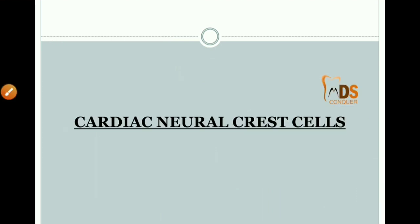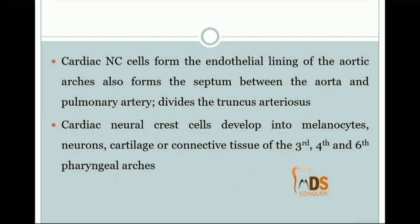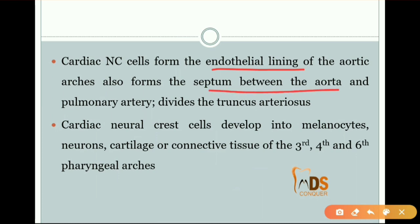Coming to the cardiac neural crest cells: these cells form the endothelial linings of the aortic arches and also form the septum between the aorta, dividing the truncus arteriosus. Cardiac neural crest cells also develop into melanocytes, neurons, and cartilage or connective tissue of the third, fourth, and sixth pharyngeal arches.